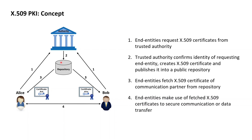Once the certificate is in this public repository, it can be fetched by the end entities depending on the actual use case. For example, if Alice wants to encrypt data such that only Bob can access it, then Alice would have to fetch the certificate of Bob. And if Bob wanted to verify a digital signature created by Alice, then Bob would need to fetch the corresponding certificate of Alice. Once the proper certificates are fetched from the repository, the end entities can finally retrieve the public keys from these certificates and make use of them to secure the data exchange between them.